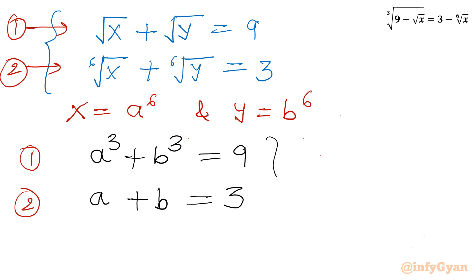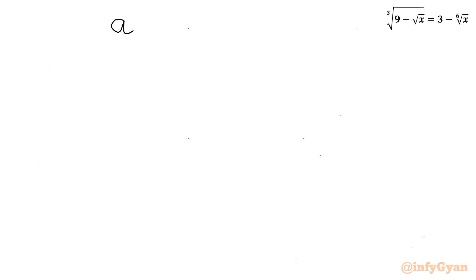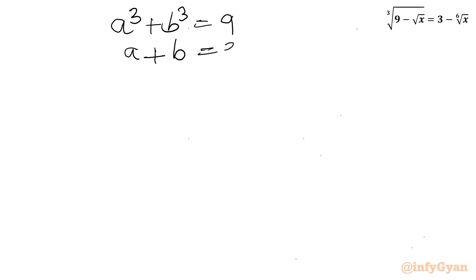This is a convenient system of equations. We have a cubed plus b cubed equal to 9, and a plus b equal to 3. I will first consider a plus b whole squared.